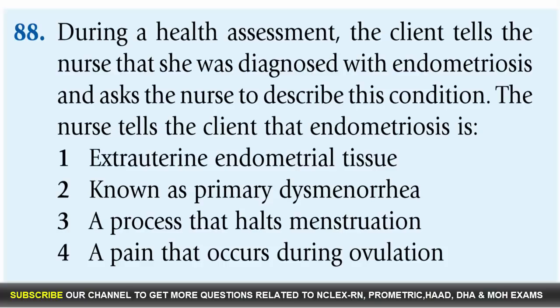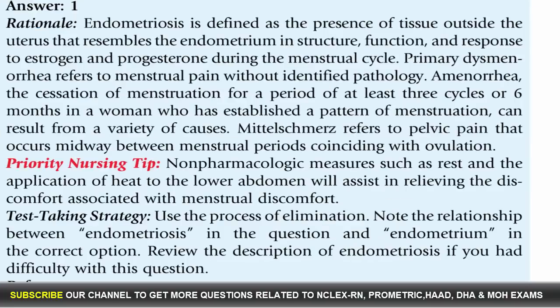Question 88: During a health assessment, a client tells the nurse she was diagnosed with endometriosis and asks the nurse to describe the condition. The nurse tells the client that endometriosis is: 1. Extrauterine endometrial tissue, 2. Known as primary dysmenorrhea, 3. A process that halts menstruation, 4. Pain that occurs during ovulation. Answer: 1. Rationale: Endometriosis is the presence of tissue outside the uterus that resembles the endometrium in structure, function, and response to estrogen and progesterone. Primary dysmenorrhea refers to menstrual pain without identified pathology. Amenorrhea is the cessation of menstruation. Mittelschmerz refers to pelvic pain coinciding with ovulation.